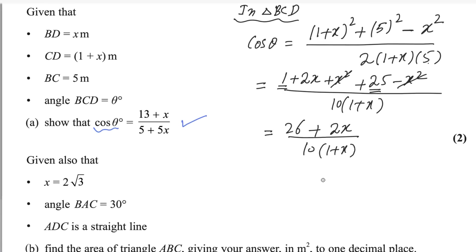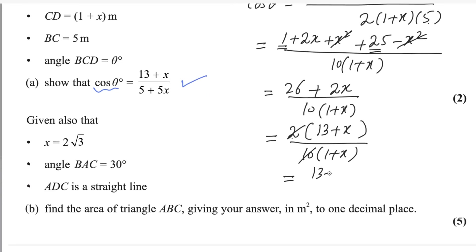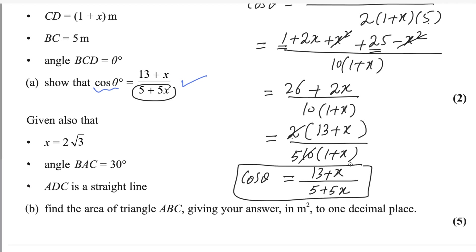In the numerator, 2 is common, so inside the bracket it is left with 13 plus x only. Check: 2 times 13 is 26, and 2 times x is 2x. Divide by 10 times (1 plus x). Simplifying, we get (13 plus x) divided by — taking 5 inside the denominator bracket — 5 plus 5x. So cosine theta equals (13 plus x) over (5 plus 5x), as required. The first part is done.